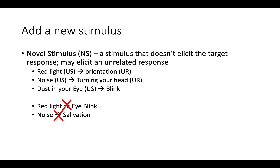A novel or new stimulus is a stimulus that doesn't elicit the target response, but it may elicit some unrelated response. For example, if I shine a bright red light in your eyes, you might look at it. If I make a noise, you might turn your head. But notice that if I shine a red light, you won't blink — that is not a reflex. If I play a noise, you won't salivate. Novel or neutral stimuli are stimuli that don't elicit a target response.